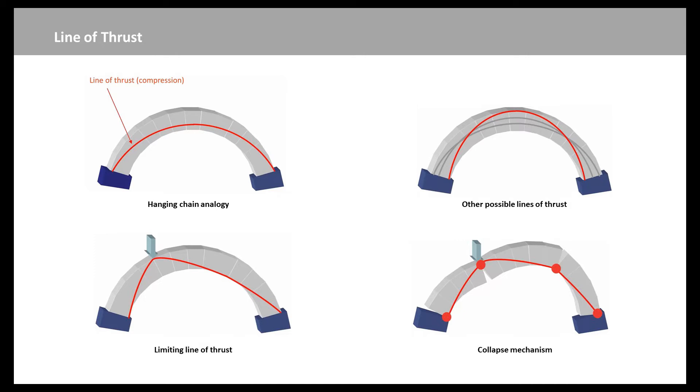Actually, at that point, you have a unique identifier of what the load carrying capacity of your structure is. It is now determinate; there is only one line of thrust. If you apply any more load at all, you will get hinges and you will get a failure mechanism.